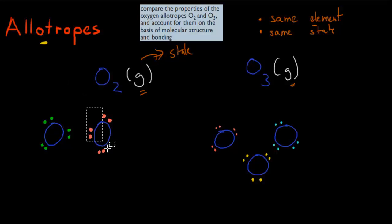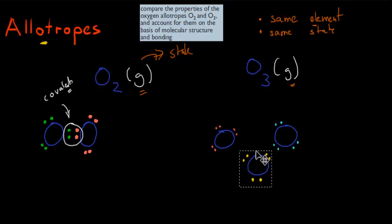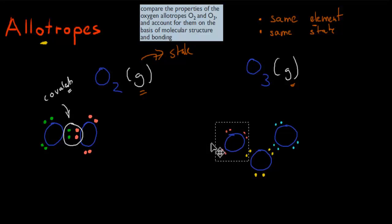Now, in the bonding, it happens a bit differently. Between oxygen, we have a covalent bond between oxygen molecules. And between ozone, we have a coordinate covalent bond, which happens between three oxygen atoms. But overall, if we're talking about gaseous oxygen and gaseous ozone, they are allotropes — they are the same element and they are in the same state.